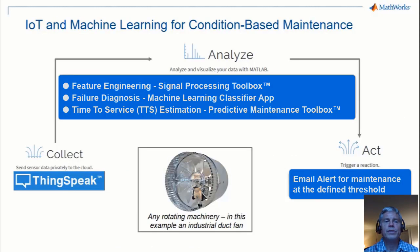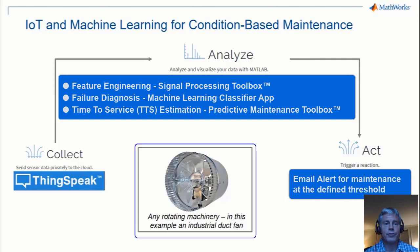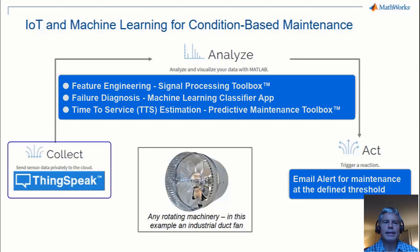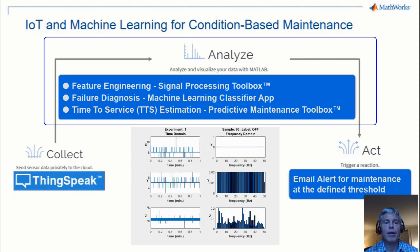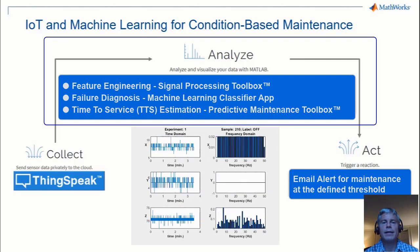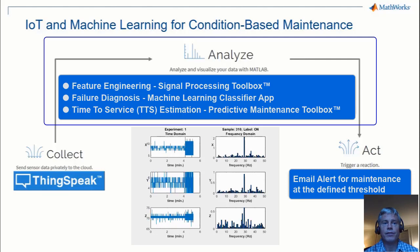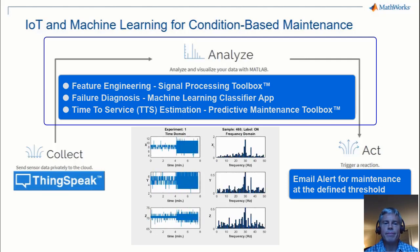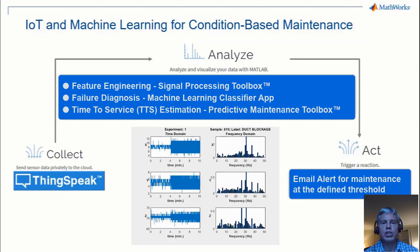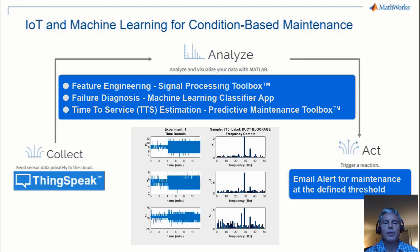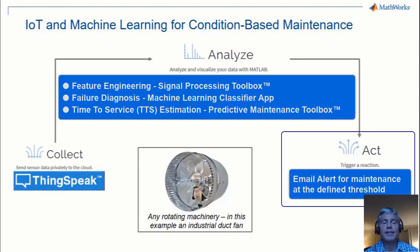In this demonstration, we use an internet-connected vibration sensor attached to a piece of rotating machinery, an industrial duct fan, to demonstrate condition-based maintenance. ThingSpeak collects the vibration data of this fan under different simulated failure conditions. Then, MATLAB extracts the key features from the vibration data and uses a trained machine learning model to diagnose the different types of failures. Finally, a trained predictive maintenance model estimates the amount of time before the machine would require service. When the predicted time to failure decreases below a set threshold, ThingSpeak sends an alert to the user.